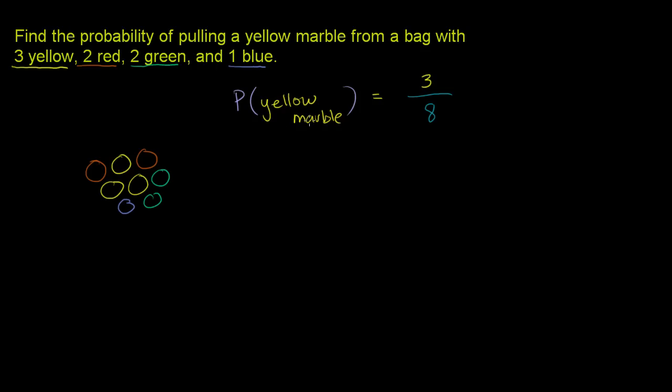So the probability of picking a yellow marble is 3 eighths. You have a 3 eighth chance of picking a yellow marble. And just the way to think about it, I just want to reiterate. It's just the number of outcomes, there's eight total outcomes. There's eight different things that you could pull out of the bag. Three of them satisfy your conditions. Three of them would be a yellow marble.